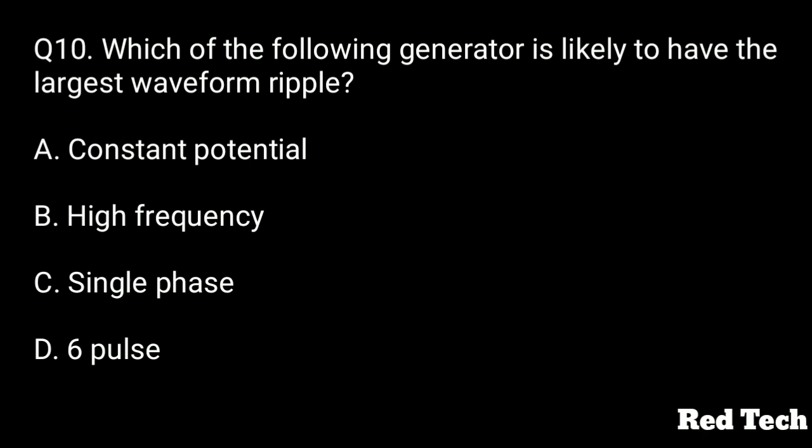Question number ten: which of the following generators is likely to have the largest waveform ripple? Option A is constant potential, option B is high frequency, option C is single phase, option D is six pulse. The right answer is option C, single phase.